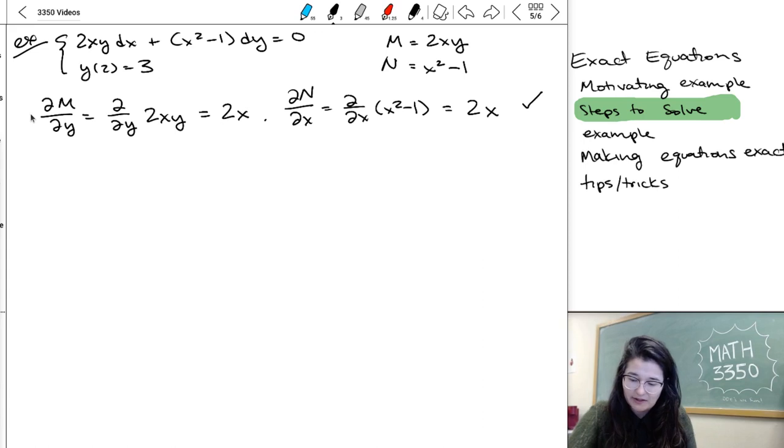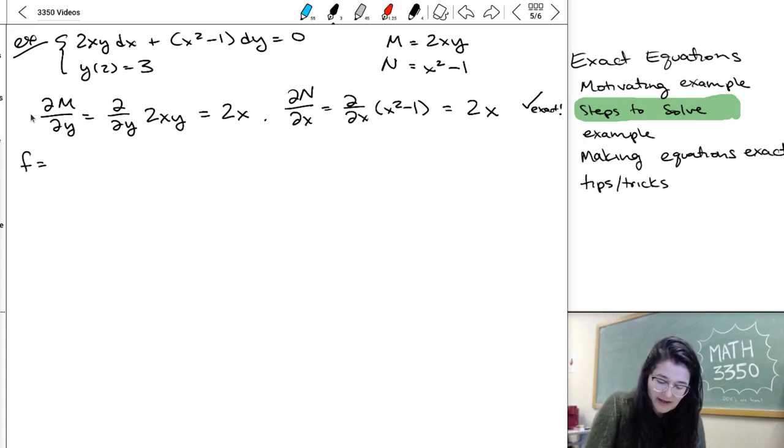So, we have an exact equation, and we can go ahead and proceed with the rest of the steps. We're trying to find f, which we think is the integral of m with respect to x. So, for us, that's the integral of 2xy with respect to x, and we're treating y like a constant, only integrating x.